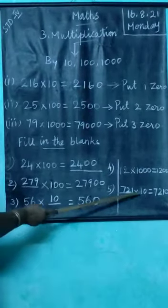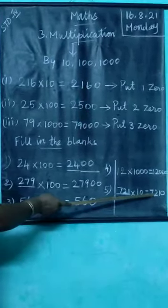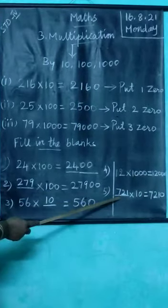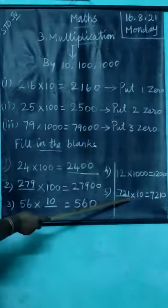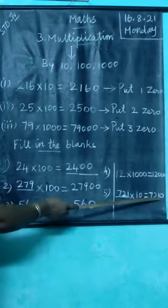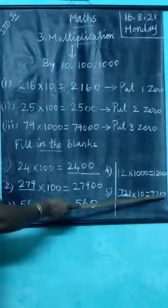Fifth one: blank into 10 equals 7210. What is the missing number? 721. We multiply by 10 to get 7210. Understand students?